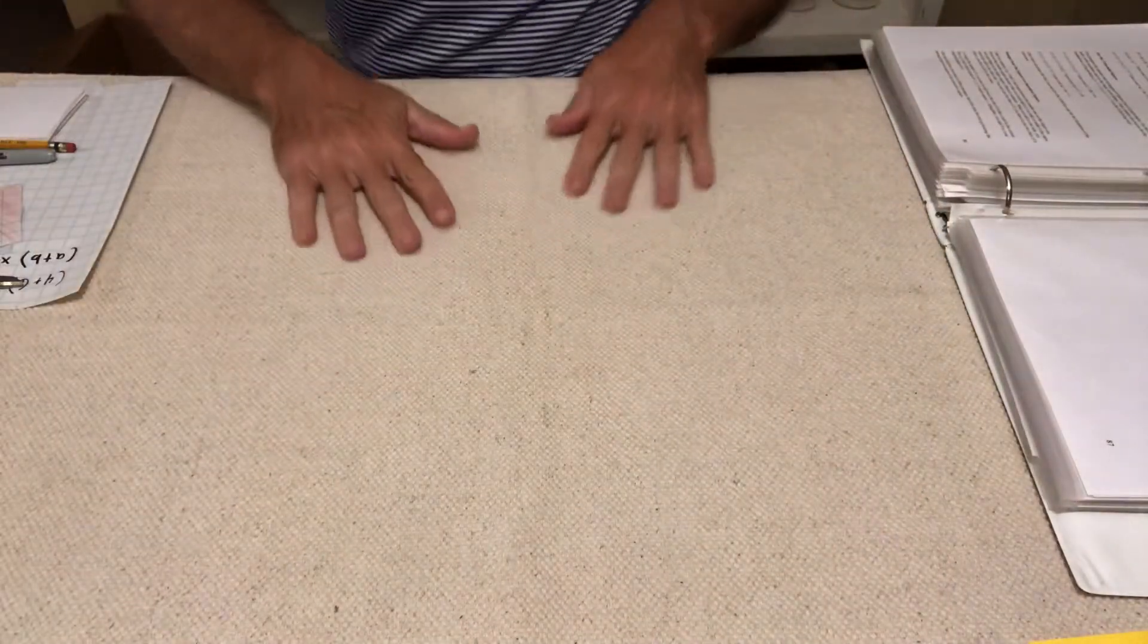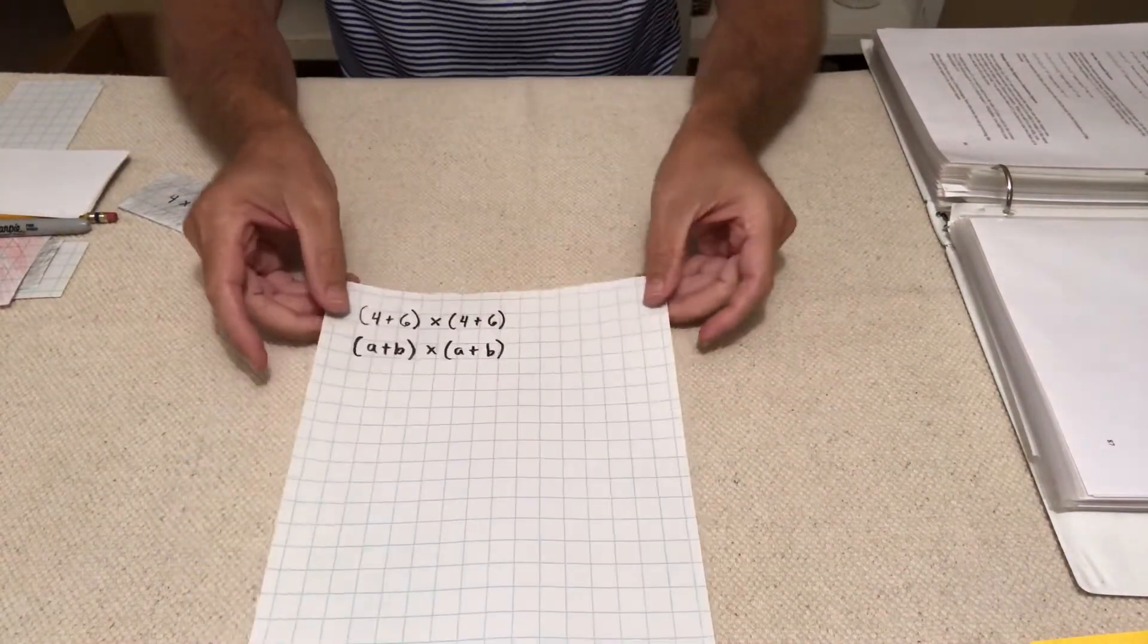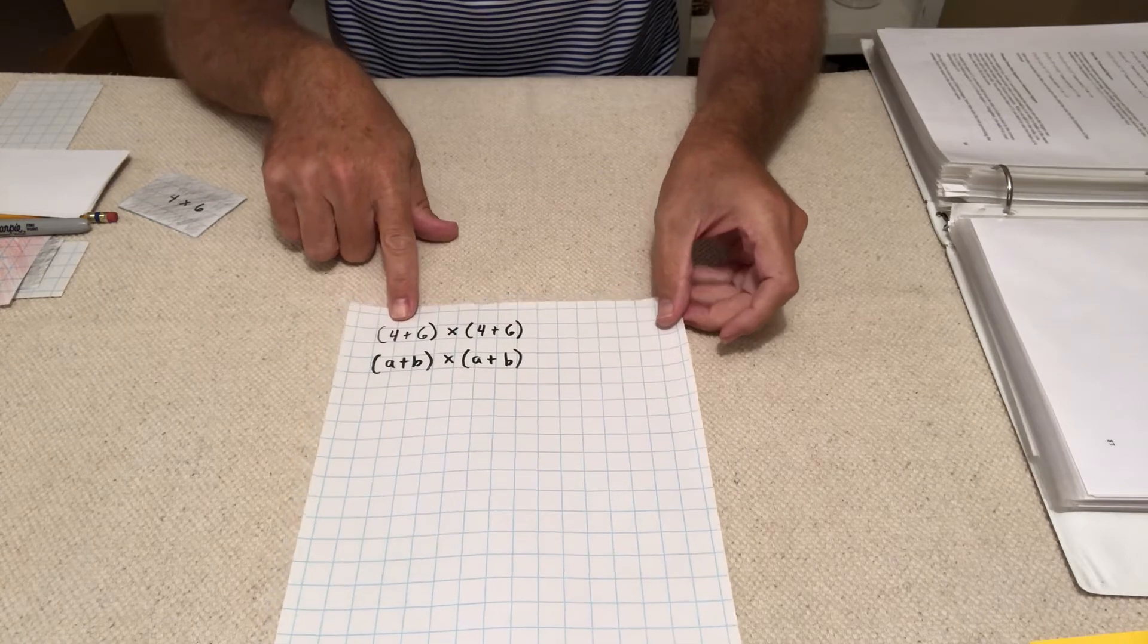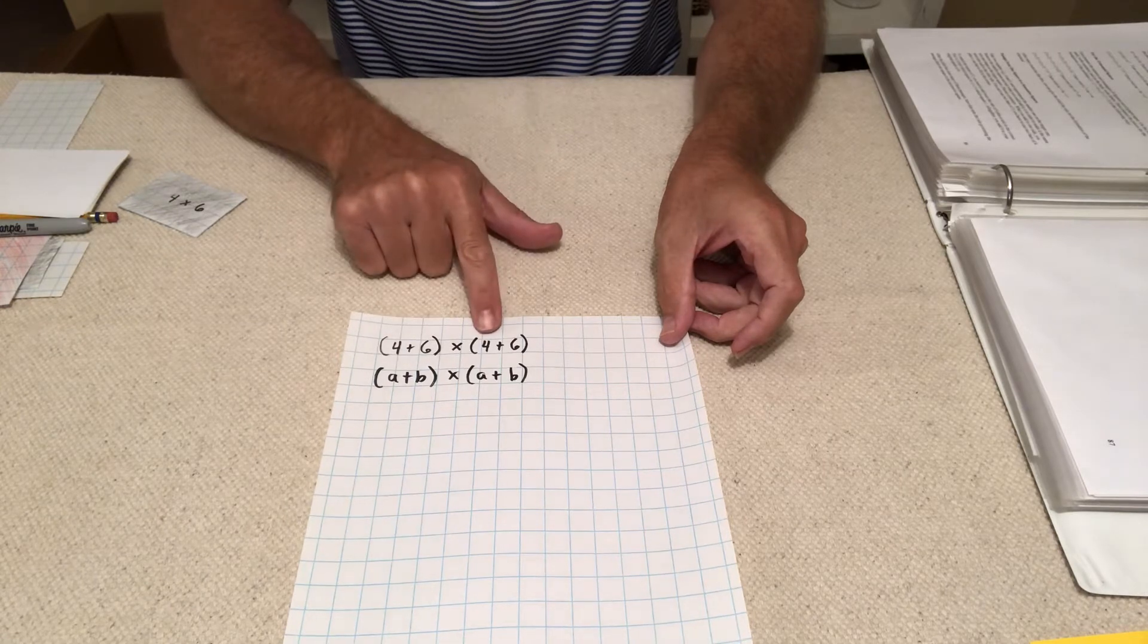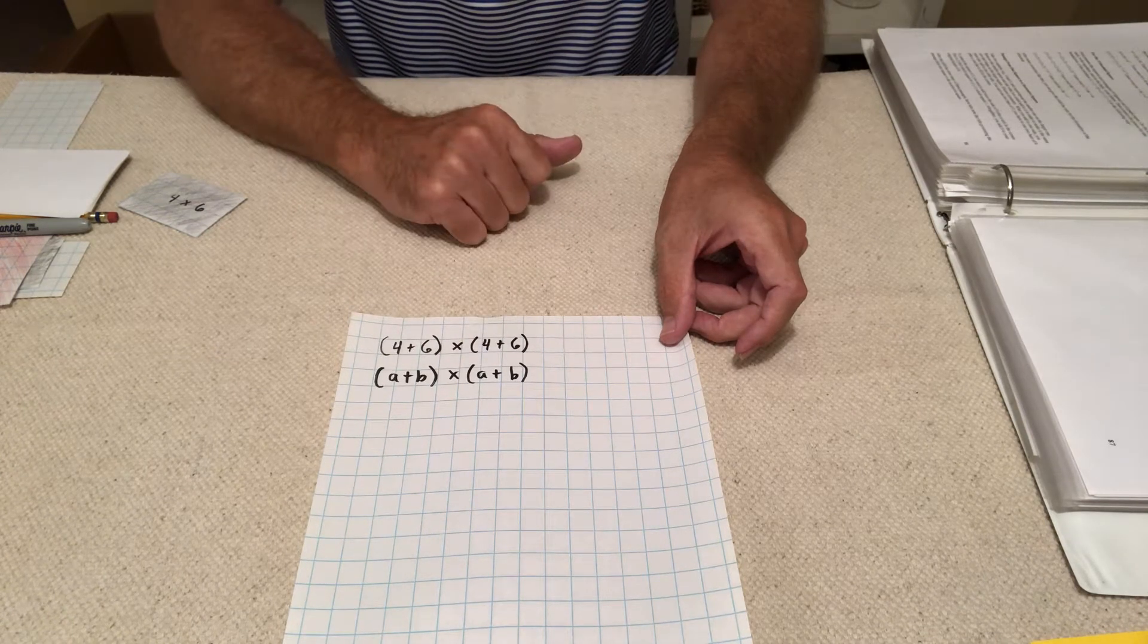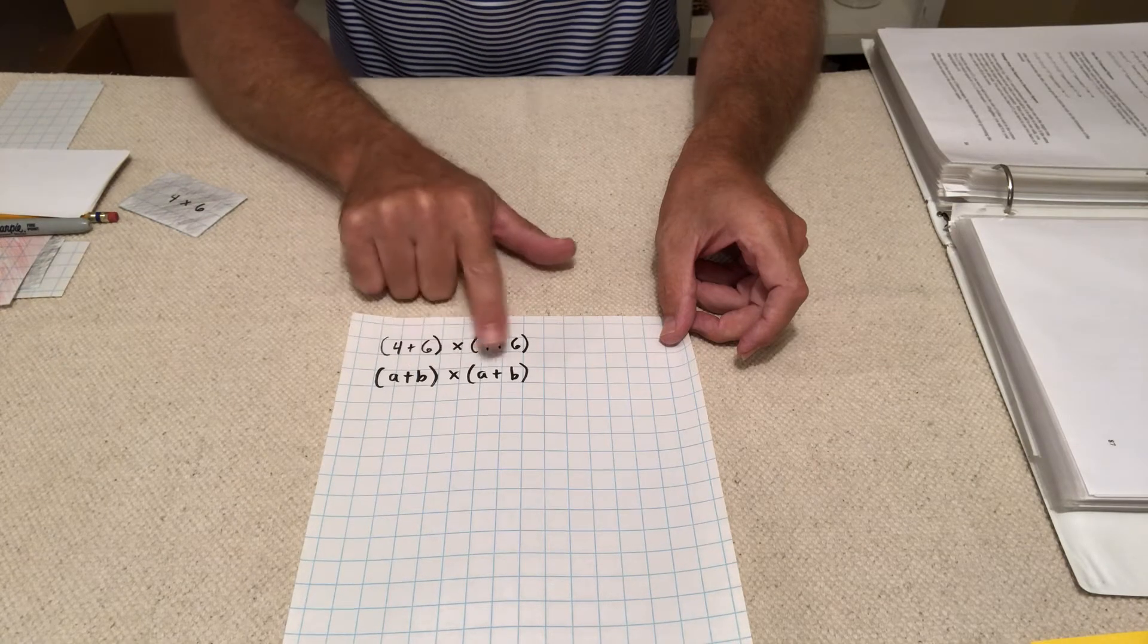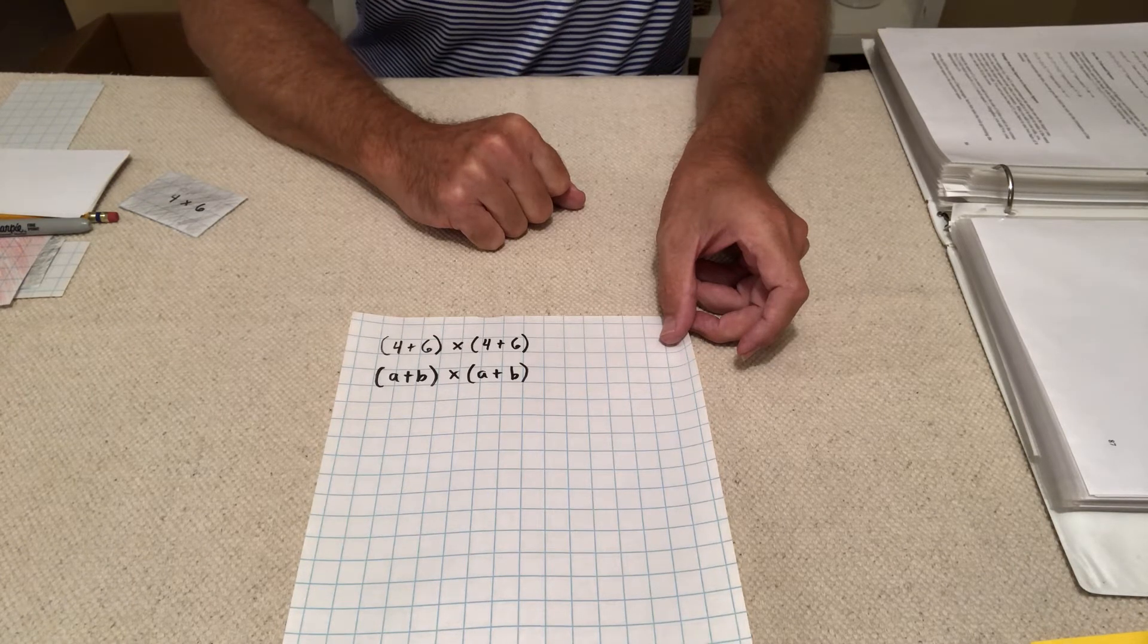So in a previous problem, we did a binomial times a binomial. And the problem was 4 plus 6 times 4 plus 6. But what we could do is we could say, everywhere there's a 4, I'm going to substitute an A for that. So the A is a variable. It stands in the place of the 4. And everywhere there's a 6 in my problem, I'm going to put a B. So the B is also a variable, standing in the place of the 6.